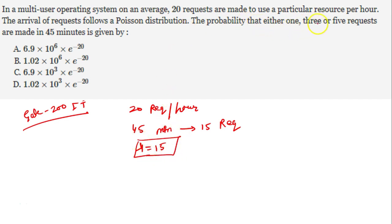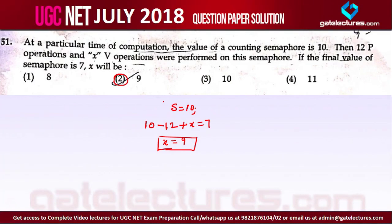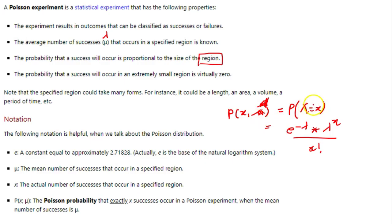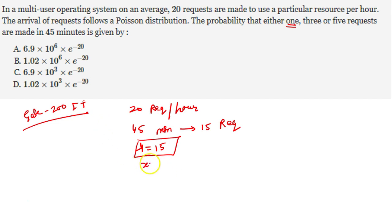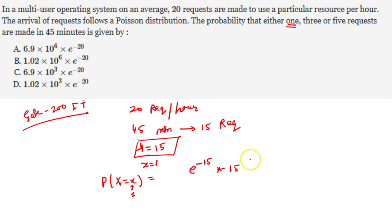The GATE question asks the probability that either one, three, or five requests are made in 45 minutes. Taking x = 1 for example: what is the probability that one request will come in 45 minutes? If asked for zero requests, we take x = 0, but here x = 1. Using the formula: e^(-15) × 15^1 / 1! = 15 × e^(-15). We know the value of e, so we can find this with a calculator.